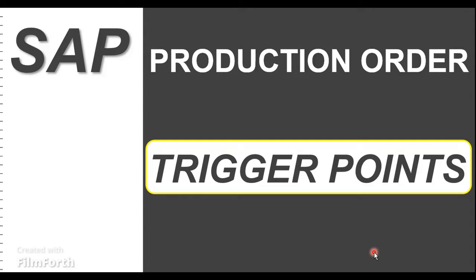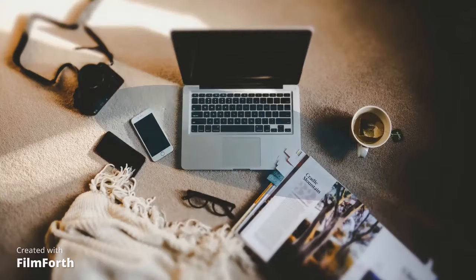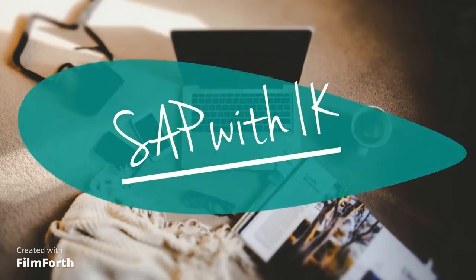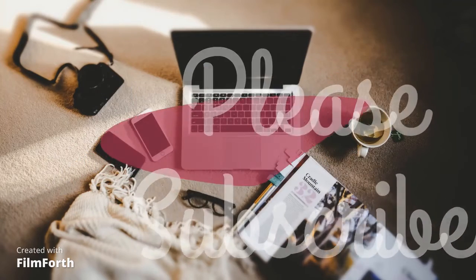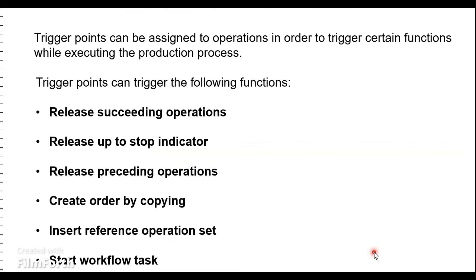Hey guys, welcome back to my channel SAP with IK. Hope you're all doing good. Today's topic is on the usage of trigger points in production orders. Basically, trigger points can be used to trigger a follow-up event or a follow-up action whenever a certain activity has been triggered in the production order. These are the six criteria where trigger points can be assigned or used while processing production orders.